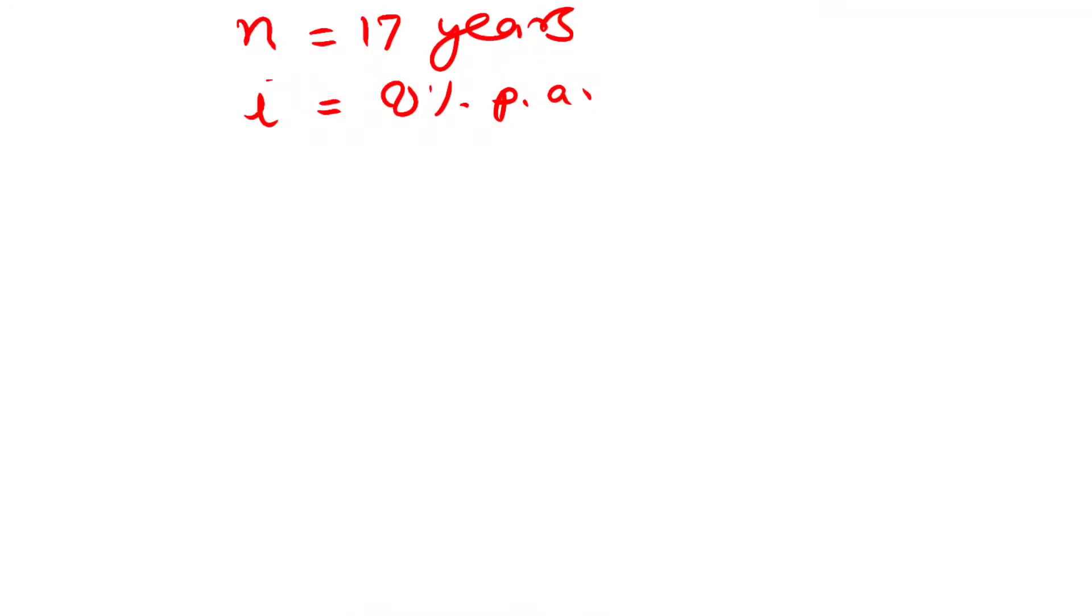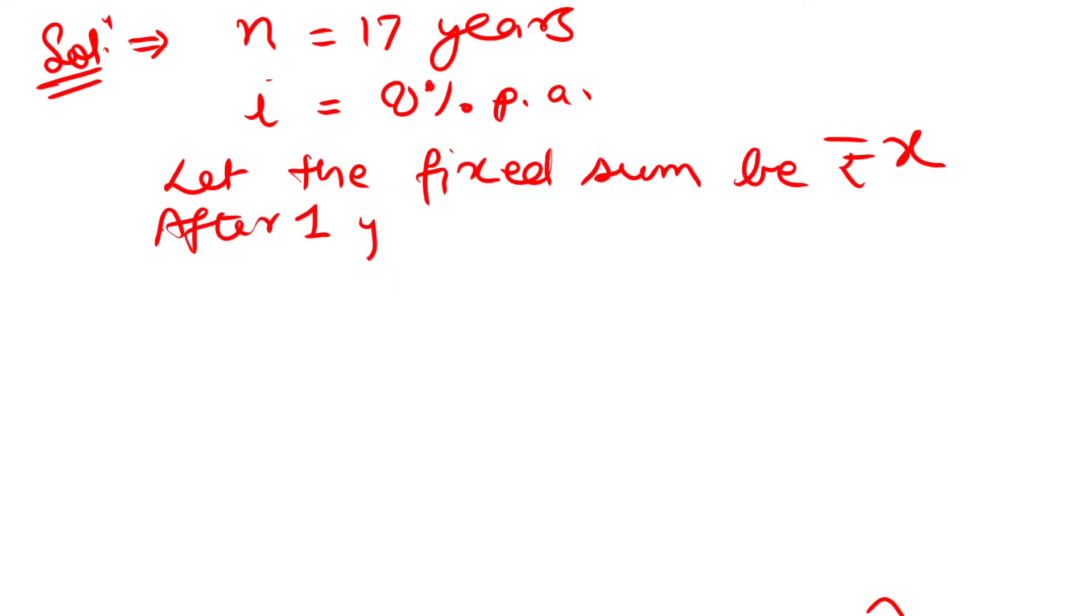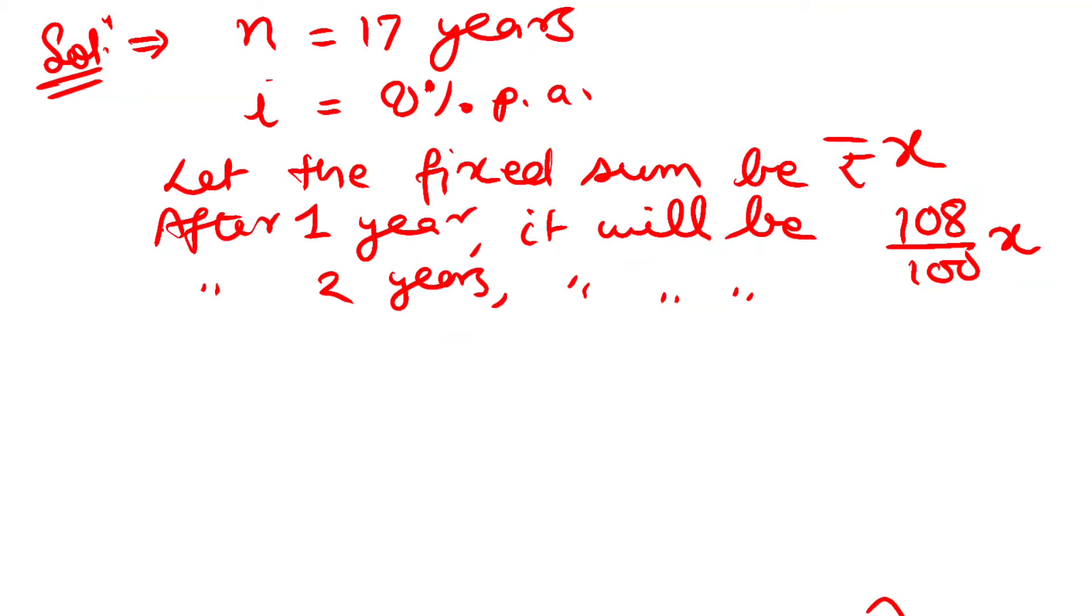Let the fixed sum which we have invested be x. After one year it will be 108 upon 100 times x. After two years it will be 108 upon 100 whole square times x, because when it comes to compounding it will increase in power.